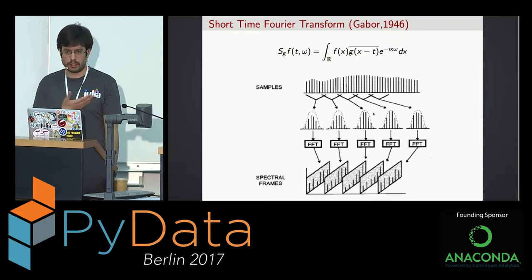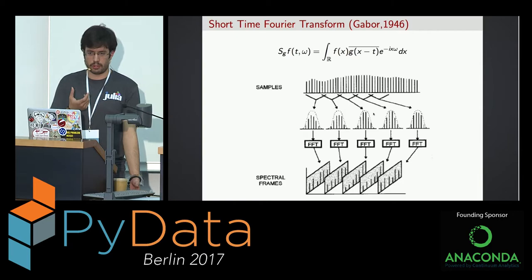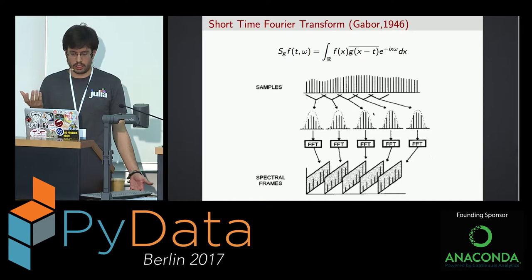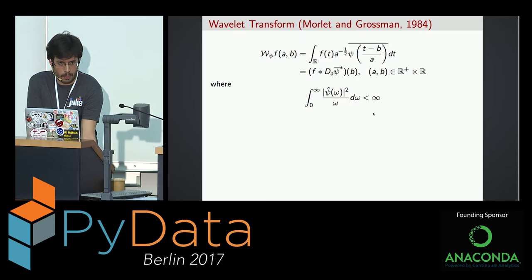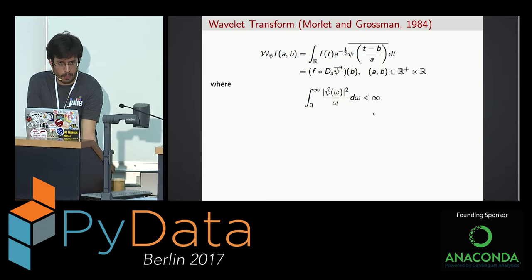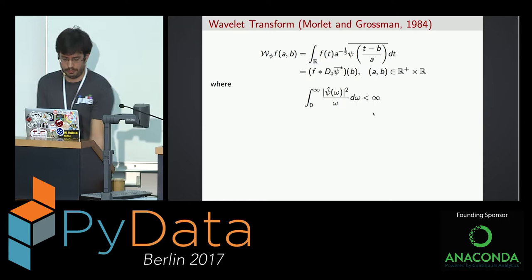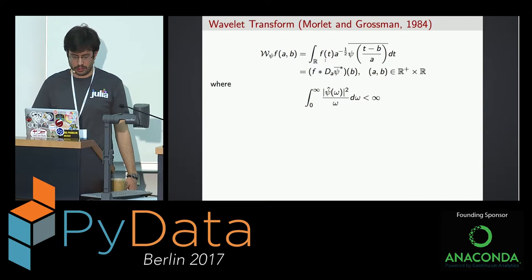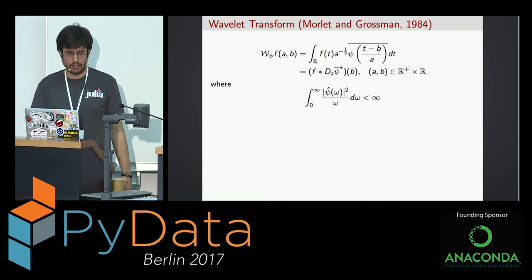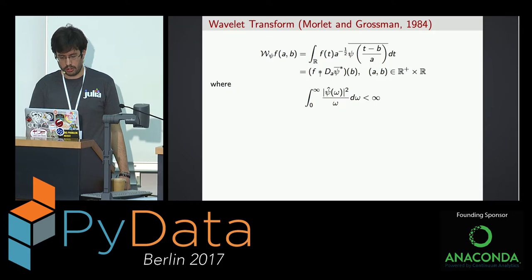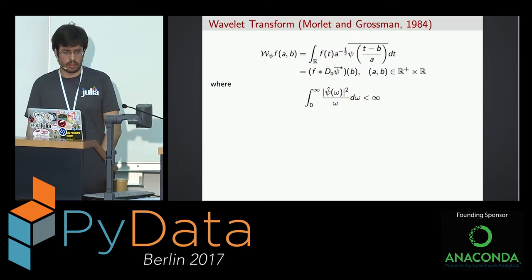Since we didn't have time information before, we introduced a window. Now we don't have different-size information. The easiest way to tackle this is to change the size — this is done by an operation called scaling. Applying scaling, or changing the sizes of the window function in the short-time Fourier transform, is what is called the wavelet transform. It's well known because it was implemented in the JPEG codec. The wavelet transform is the same as the STFT but you divide by parameter A, which modulates the window size.